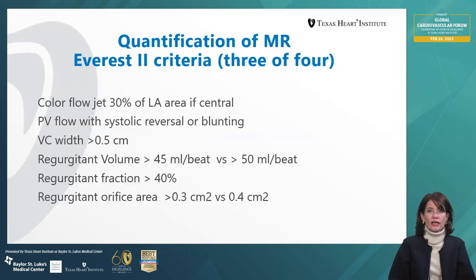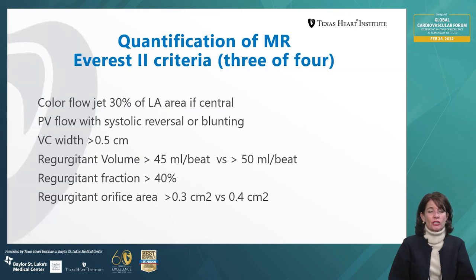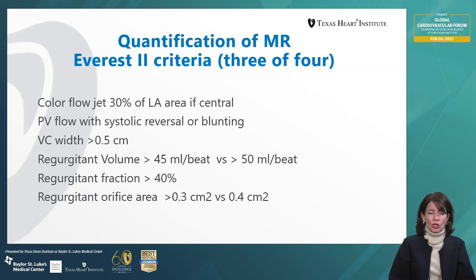Pre-procedural hemodynamics are important, and assessment of the transmitral gradient and pulmonary veins is very important. We quantify MR in some cases by EVEREST II criteria, requiring at least three of four: color jet area of a central jet ≥30% of the left atrial area; pulmonary vein systolic flow reversal or blunting indicating significant hemodynamic MR; vena contracta width ≥0.5 cm; regurgitant volume at least 45 mL (in the US we prefer 50 mL per beat), corresponding to a regurgitant fraction over 40% and regurgitant orifice area at least 0.3 cm², ideally nearer to 0.4 cm².